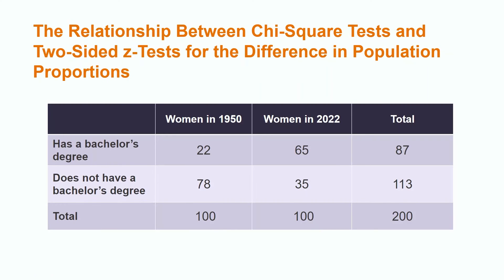When used with two-by-two tables, conducting a chi-squared test and a two-sided z-test for the difference in population proportions gives identical p-value results. We know that a test is two-tailed when it contains words such as 'changed' or 'different' rather than 'increased' or 'decreased'.